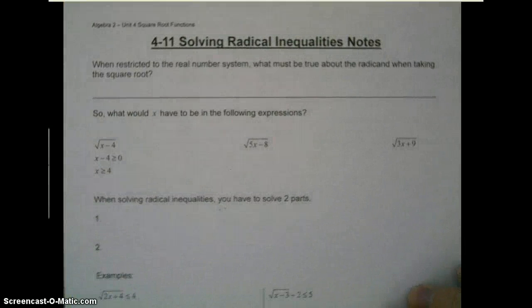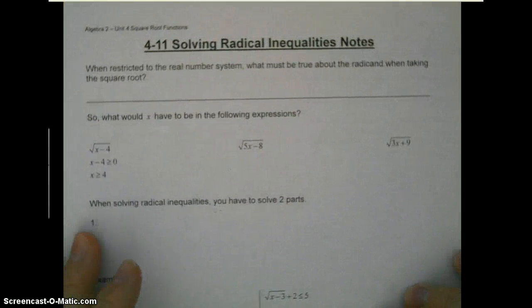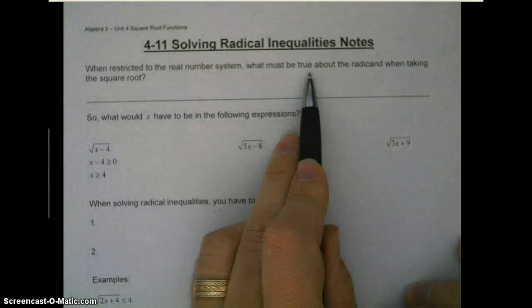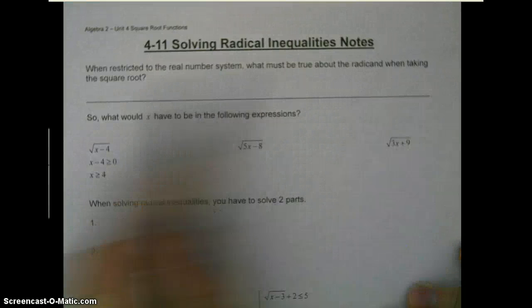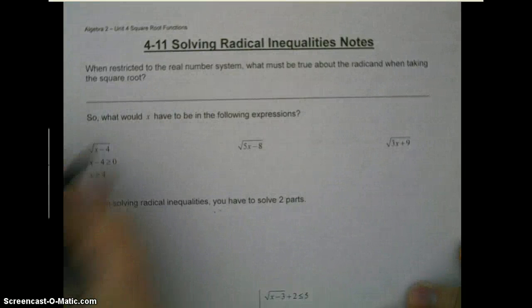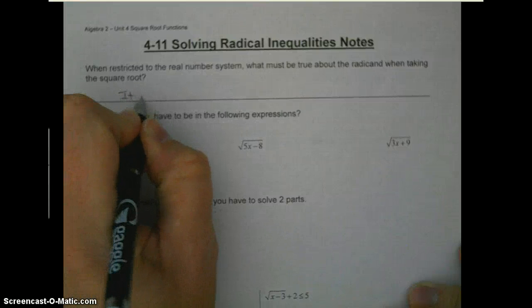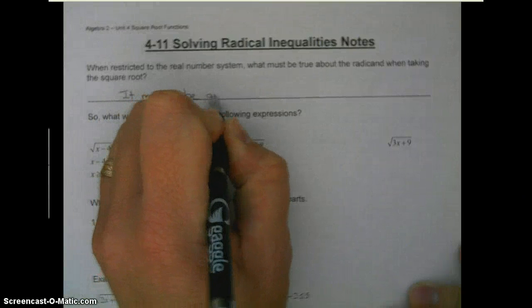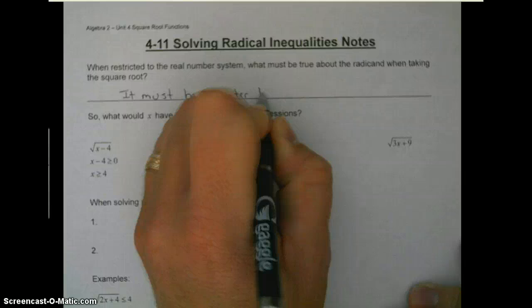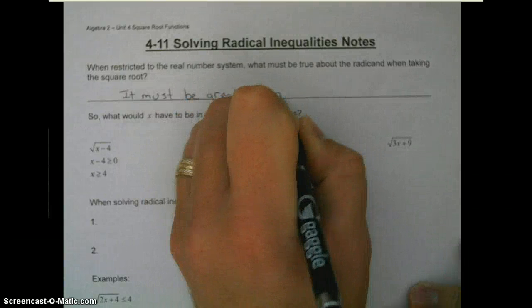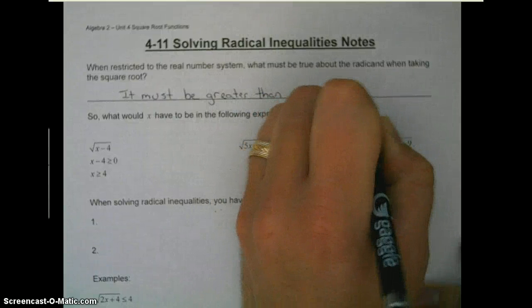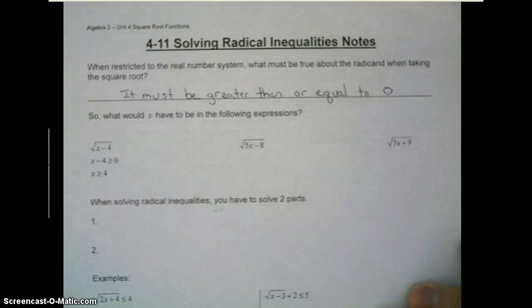Solving Radical Inequality Notes. When restricted to the real number system, what must be true about the radicand when taking the square root? It must be greater than or equal to zero. The radicand must be greater than or equal to zero.